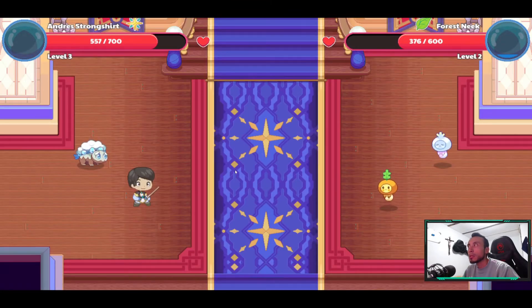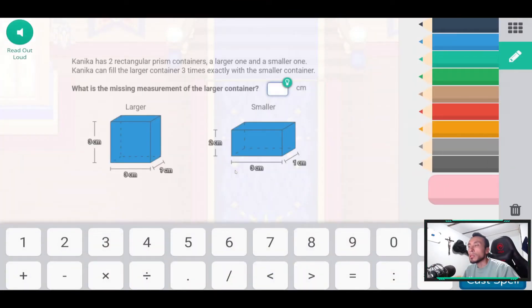What is missing on the large container? This container has two rectangular prisms. Container largo one and container largo container three. What is small container?